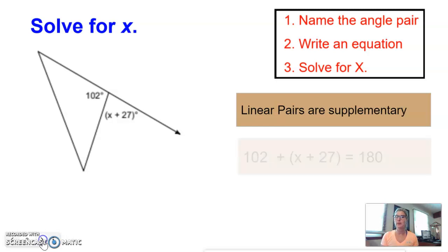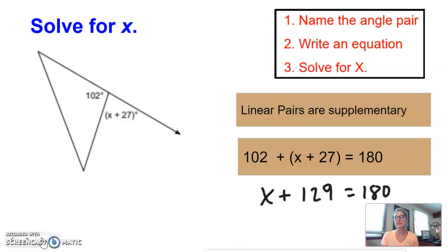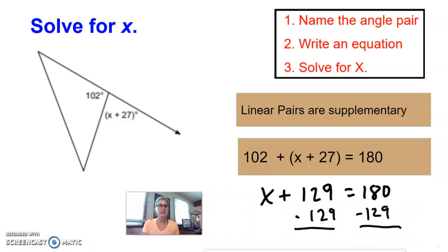This is a linear pair. We know linear pairs are supplementary. We're going to add those two angles to equal 180 degrees. Combine your like terms and then subtract 129 from both sides so that you can solve for X, get it alone. So we know that X is 51 and that's what we're asked to do.